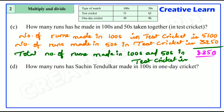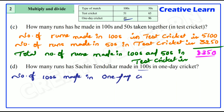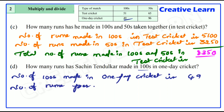Next question: how many runs has Sachin Tendulkar made in centuries in one-day cricket? Moving to one-day cricket. Number of centuries made in one-day cricket is 49. Number of runs per one century is 100.